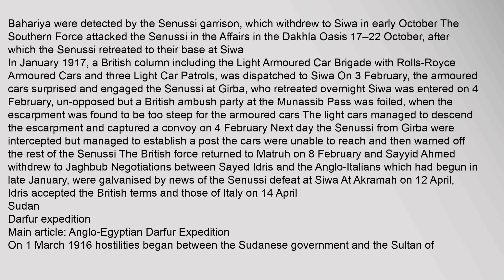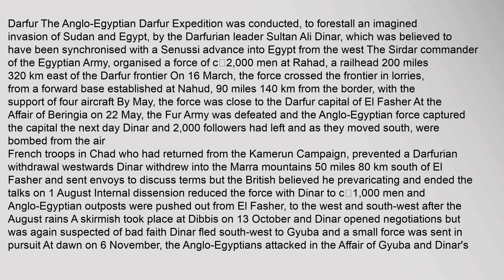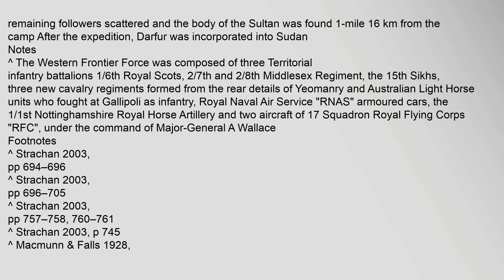Sudan — Darfur Expedition: On 1 March 1916, hostilities began between the Sudanese government and the Sultan of Darfur. The Anglo-Egyptian Darfur expedition was conducted to forestall an imagined invasion of Sudan and Egypt by the Darfurian leader Sultan Ali Dinar, which was believed to have been synchronised with a Senussi advance into Egypt from the west. The Sirdar, commander of the Egyptian army, organised a force of approximately 2,000 men at Rahad, a railhead 200 miles away. The remaining followers scattered and the body of the Sultan was found 1 mile away.